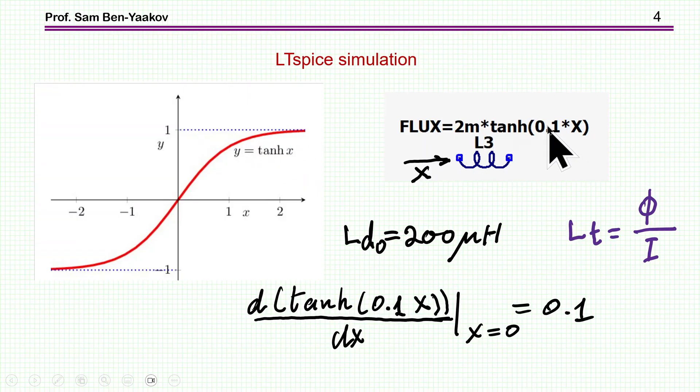For these numbers, we expect a differential inductance of 200 microhenry, because the derivative around zero of this tangent hyperbolic 0.1x is 0.1, and then times 2 milli, it's 200 microhenry. This is the idea of this LT Spice model which I'm going to use to demonstrate the behavior of the nonlinear inductor as you pass DC current through it.